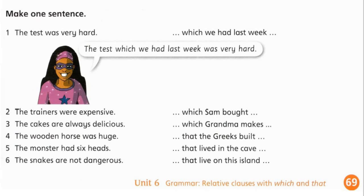Number five: 'The monster that lived in the cave had six heads.' That refers to the monster, so we put it after monster: 'The monster that lived in the cave had six heads.' Number six: 'The snakes that live on this island are not dangerous.'